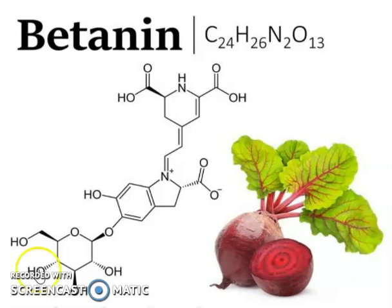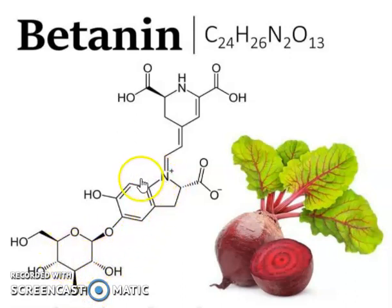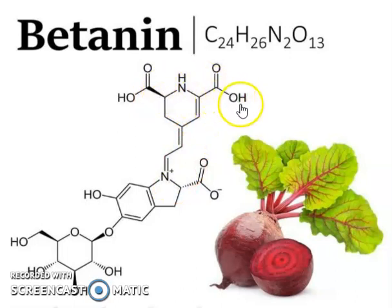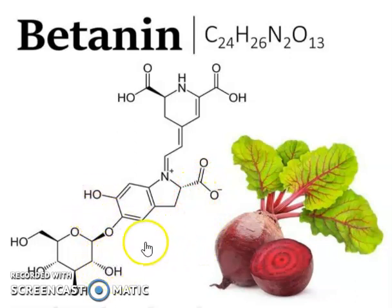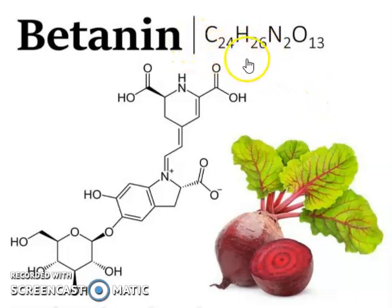So you can see here the structures of betanine. This is the glucose unit, this is the heterocyclic compound, you have many functional groups — carboxylic acid groups and alcoholic groups, and glycosidic linkage. And you have the formula here: carbon 24, hydrogen 26, N2, and O30.